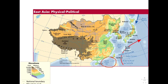Moving on to the Korean peninsula, circled in yellow. The Korean peninsula juts southeast from China's Manchurian Plain, separating the Sea of Japan from the Yellow Sea. This area consists mainly of mountains surrounded by coastal plains.